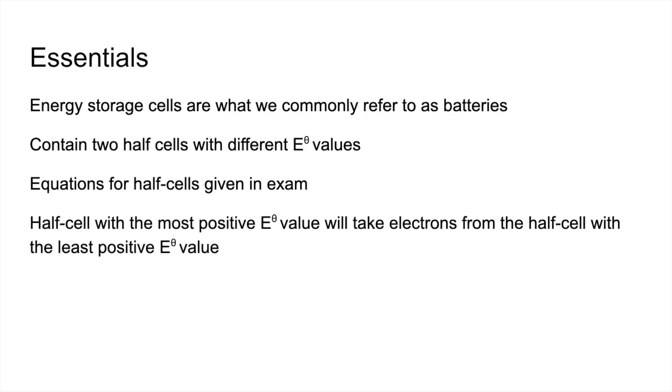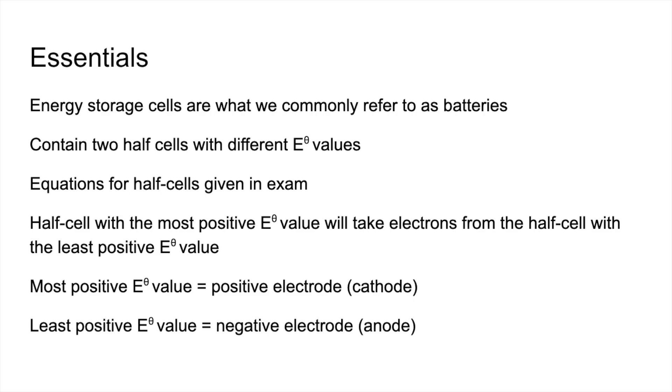So the half cell with the most positive standard electrode potential value would take electrons from the half cell with the least positive electrode potential value. The most positive electrode potential value is the positive electrode in the cell, so the cathode. And the least positive value is the negative electrode, and so the anode.